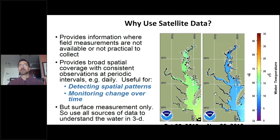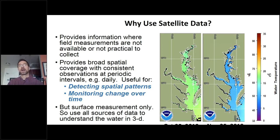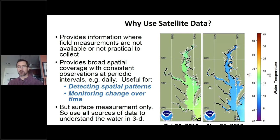From the example, we get the full expanse — data for all of Chesapeake Bay, that's our broad spatial coverage. Looking at two days — one in October 2019 and one in November 2019 — you can see it's a very simple example: the temperature is decreasing over that month. That's what we mean by change over time.